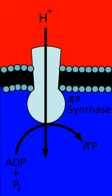Electron transport chains are used for extracting energy via redox reactions from sunlight in photosynthesis, or in the case of the oxidation of sugars, cellular respiration.